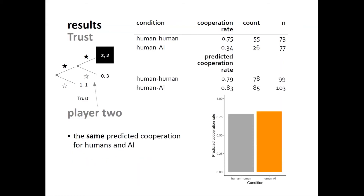We also asked player-two participants what they expected the first player to do while waiting for the first player's choice. They expected both the machine and the human to cooperate with them, but in return they would not reciprocate that cooperation when dealing with the machine, though they would reciprocate it when interacting with another human.